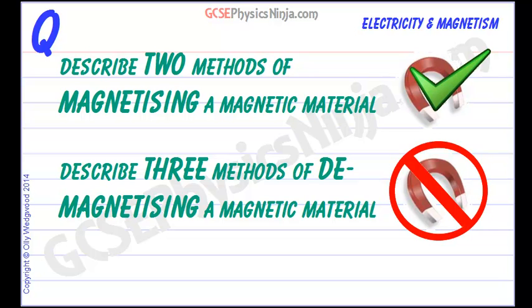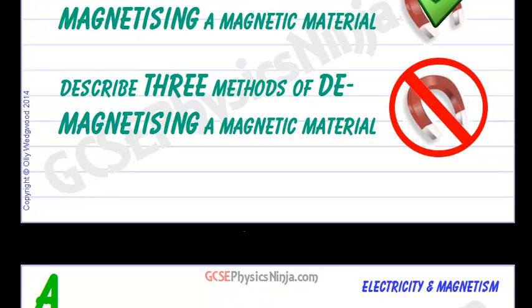Describe two methods of magnetizing a magnetic material and three methods of demagnetizing a magnetic material. In other words, how do we align all of the domains in a magnetic material? And when we're demagnetizing, how do we scramble those domains up so they're pointing in random directions and there's no more magnetic effect?